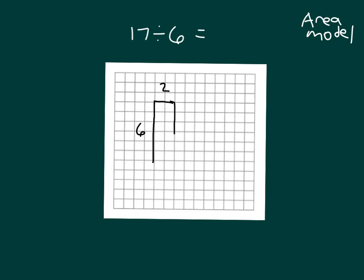And that's our rectangle, then, for our area model. And that will be our quotient. And then we still have our remainder. What we still have, we have 12 there drawn so far. And then so we have 5 more. And then so that's why our remainder is 5. So using the area model, I've shown that 17 divided by 6 is equal to 2, with the remainder of 5.